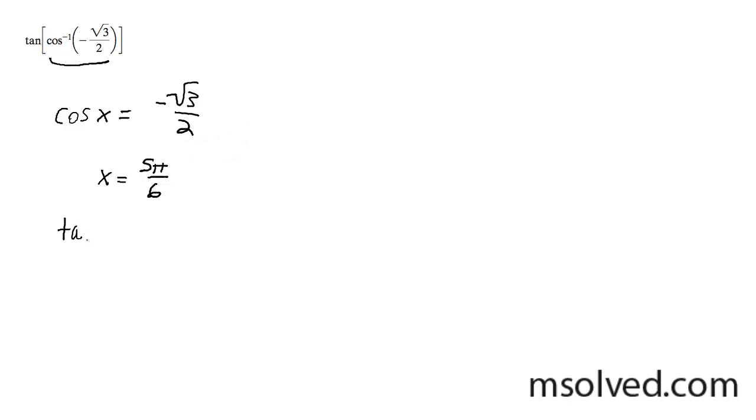So you're going to take the tangent of 5 pi over 6. And if you draw a unit circle here, 5 pi over 6 is roughly here, and it's opposite over adjacent.